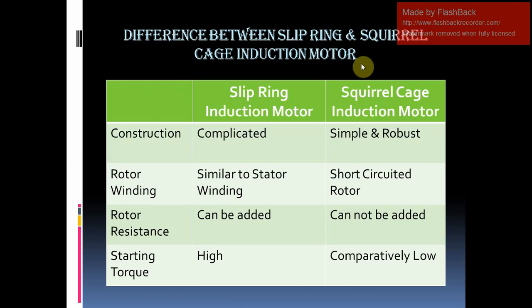The next topic is rotor resistance. In case of squirrel cage induction motor, it is a short circuit rotor, so external resistance cannot be added. In case of slip ring induction motor, the rotor is short circuited, but external resistance can be connected.